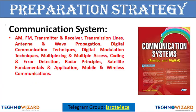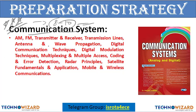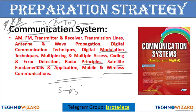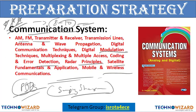Next is communication system — a very, very important subject from your point of view and for any other electronics exam. Around 8 to 10 questions can come from communication system. The syllabus covers amplitude modulation, frequency modulation, data modulation, error detection, radar principles, satellite, mobile and wireless communication, etc. The best book is Sanjay Sharma. You can also get PDFs online, and I have given some PDFs of these books in the group.